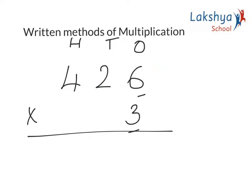3 × 6 gives me 18. So 1 is carried over here. 3 × 2 is 6, plus 1 carry over gives me 7. 3 × 4 is 12. So I need to write 1 in thousands place and 2 in hundreds place. So the product is 1278.